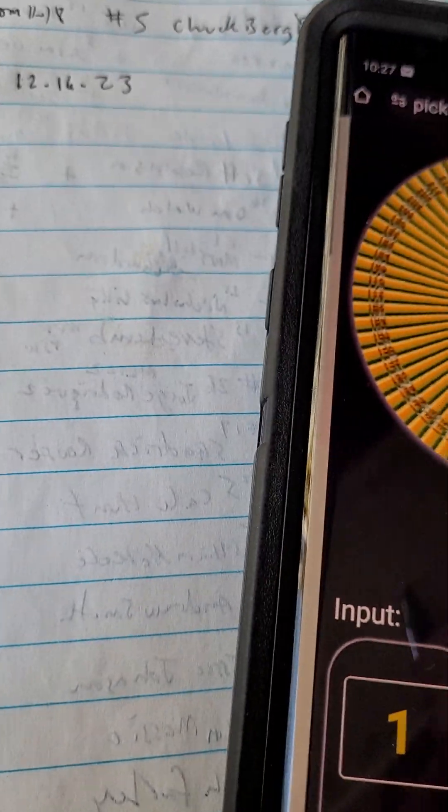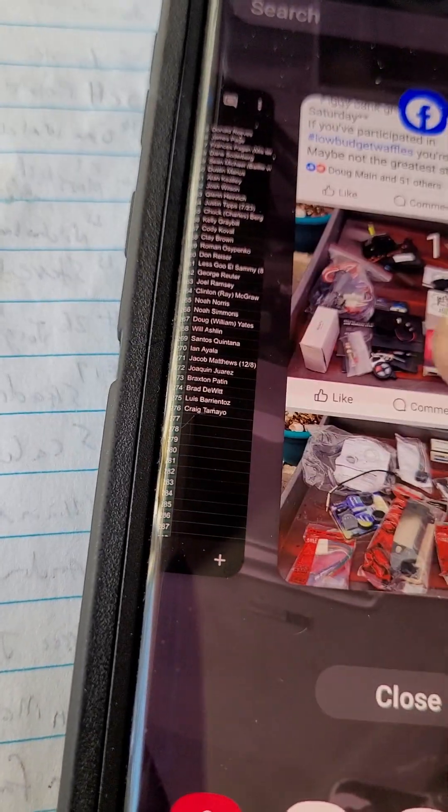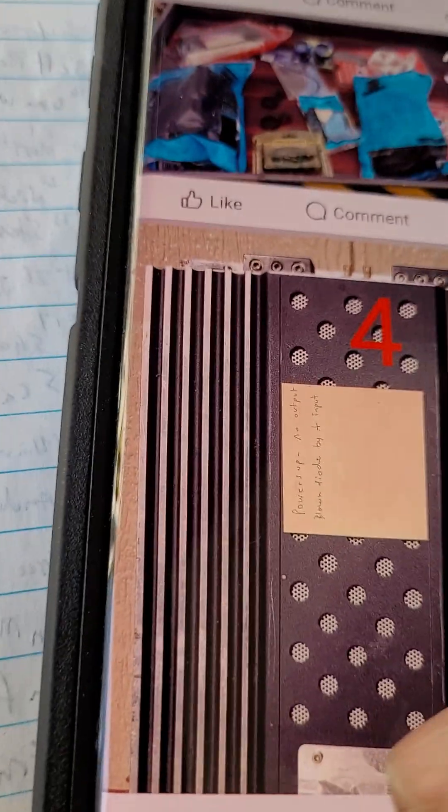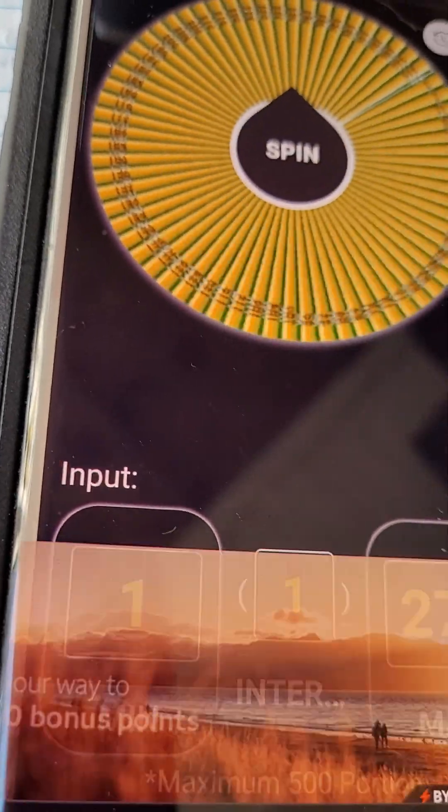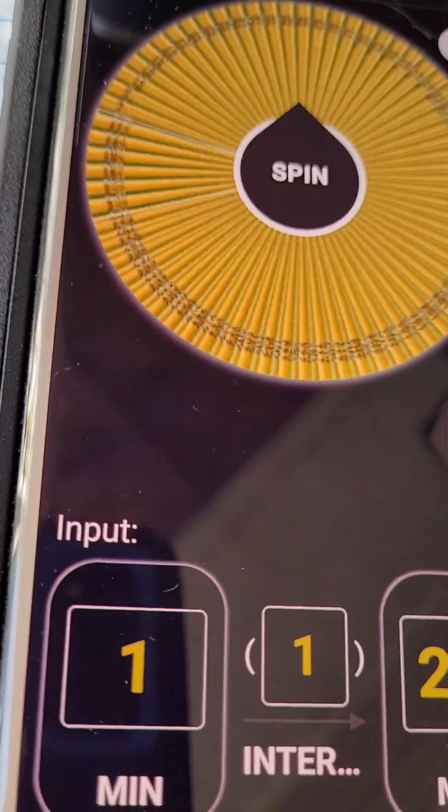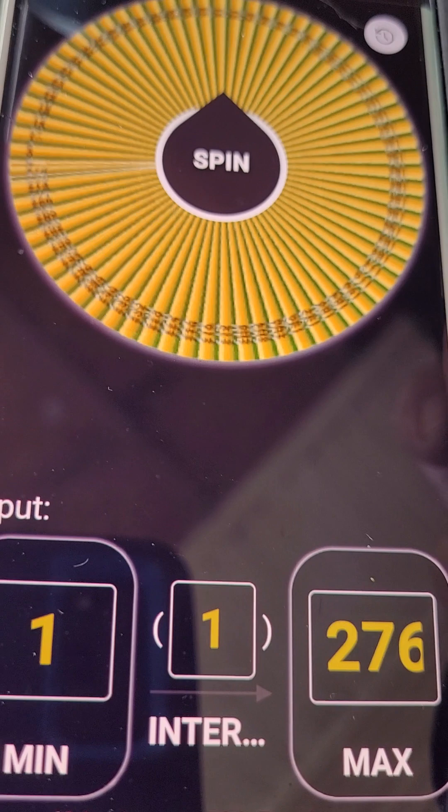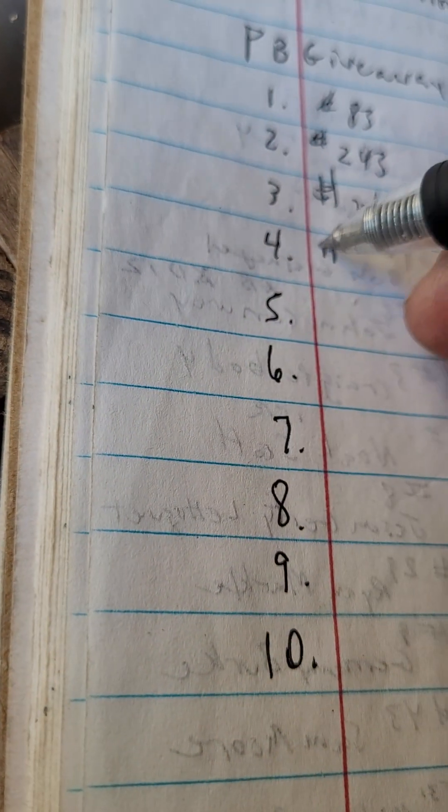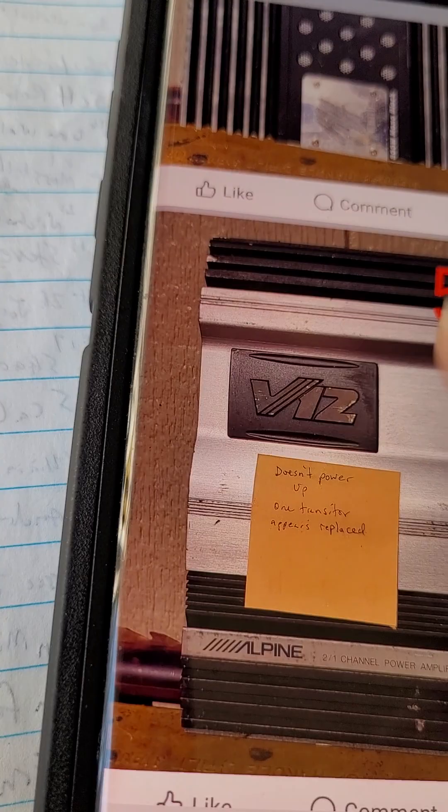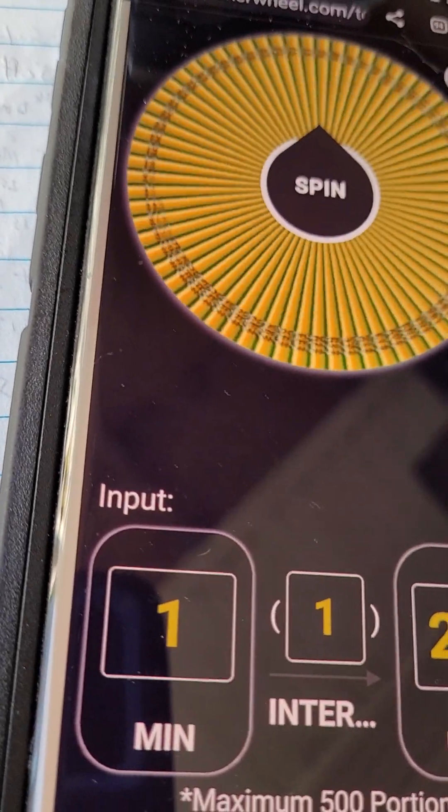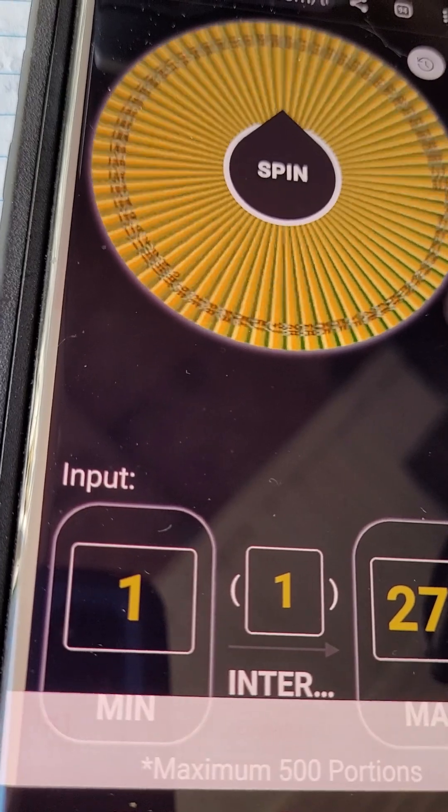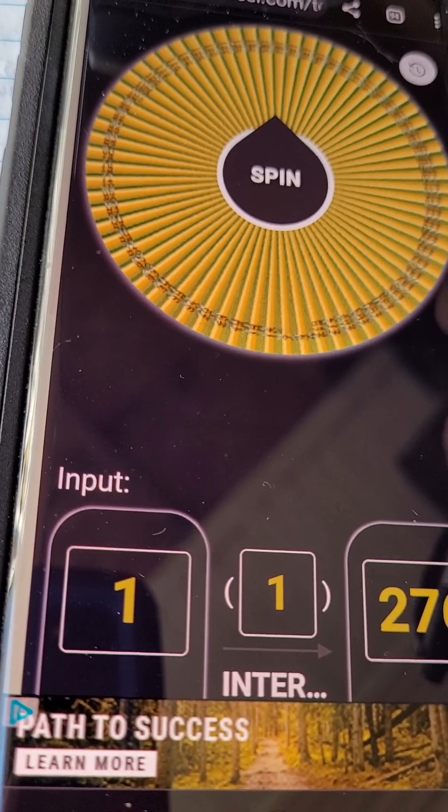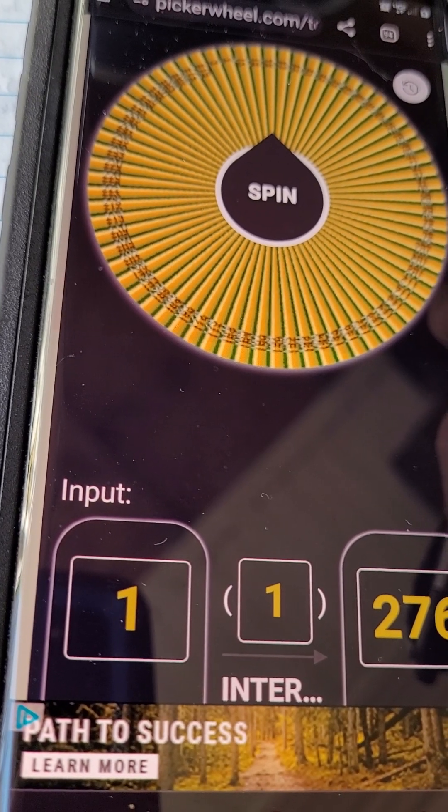The MA Audio amp is 192. Alright, what was next? The Alpine amp. And the winner is number 20.